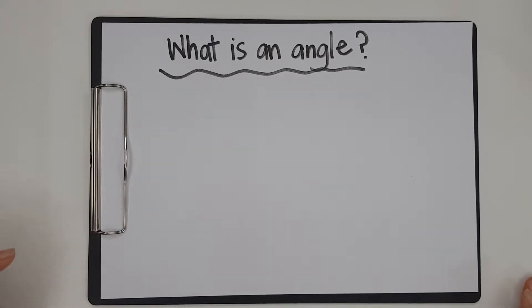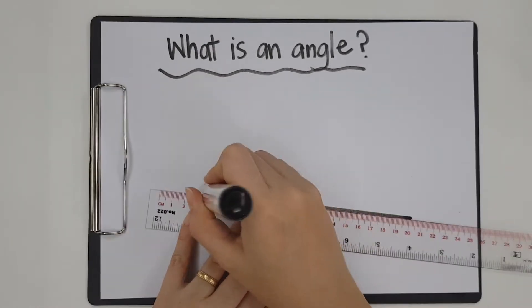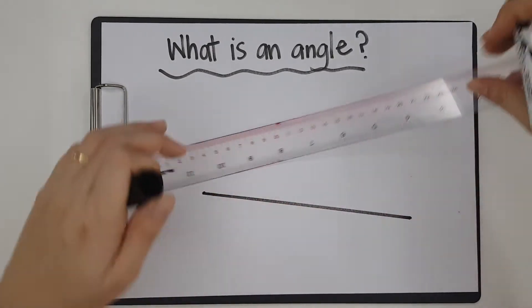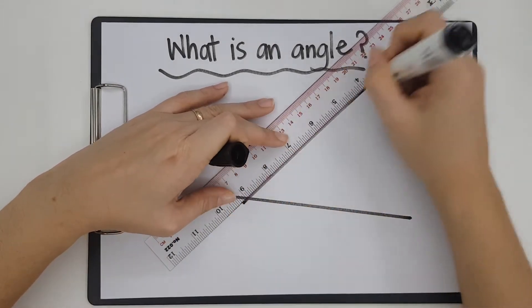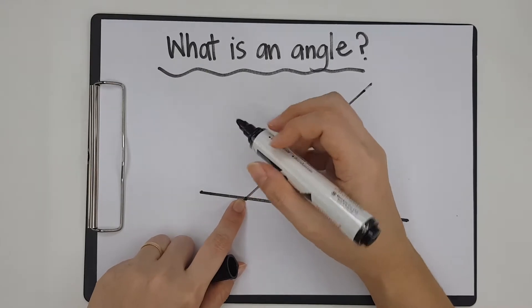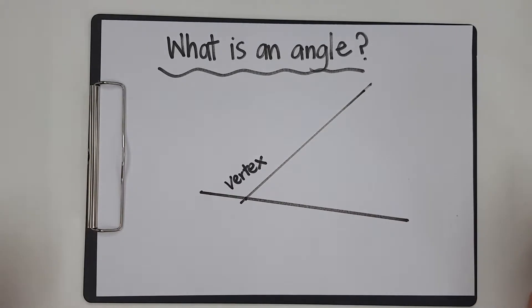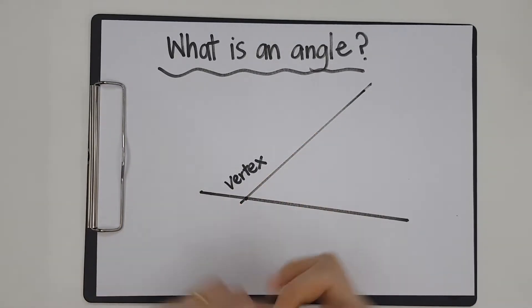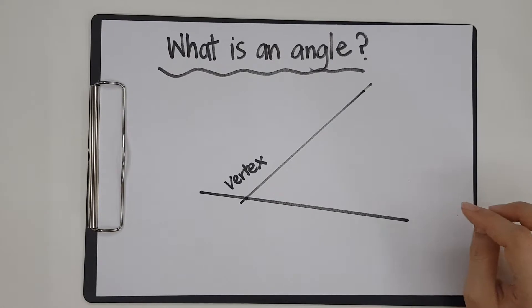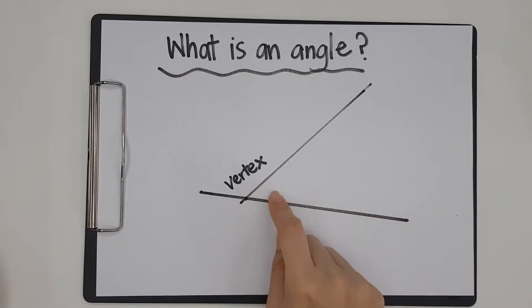Hello students, what is an angle? That's the question we're going to tackle today. We have learned that an angle is formed when two lines meet. I'm going to be drawing one line, and then two lines that meet. When they meet, this point is called a common point, or I'm also going to be calling it a vertex. This is a more mathematical name for this point, and an angle is formed at this point. There are actually four angles, but I'm going to only be looking at this one.